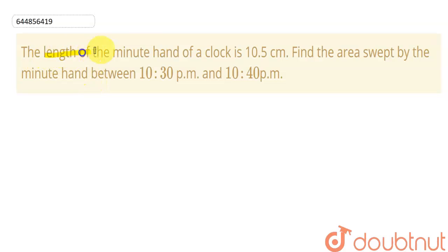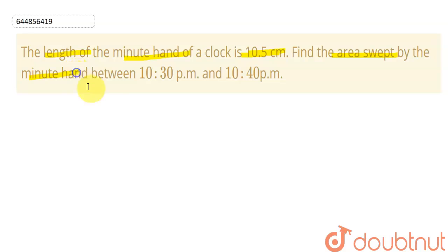In this question, we have given that the length of the minute hand of a clock is 10.5 centimeters. We need to find the area swept by the minute hand between 10:30 PM to 10:40 PM.